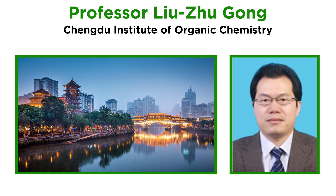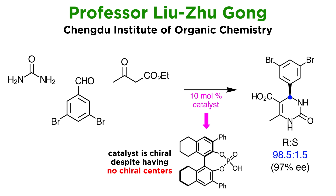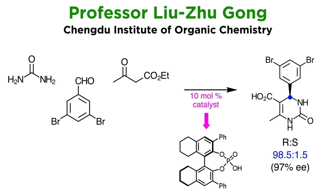As an example of this type of research, we highlight the recent work of Professor Lu Zhu Gong at the Chengdu Institute of Organic Chemistry in China. By using 10 mole percent of a readily available chiral phosphoric acid as a catalyst, he was able to perform this reaction and preferentially obtain the R enantiomer in a ratio of 98.5 to 1.5, which means a very impressive enantiomeric excess of 97%. Note that the catalyst, despite not possessing any chiral centers, is dissymmetric by virtue of its axial chirality, and quite enantiomerically stable because rotation around the carbon-carbon bond connecting the two aromatic rings is hindered. There are many other enantioselective applications of the Biginelli reaction, and in addition to chiral phosphoric acids, one can use a variety of Lewis acids.